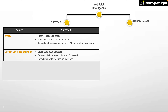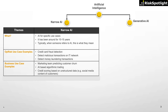Examples of implementation of narrow AI technologies in operational risk management include credit card fraud detection, detecting malicious transactions on IT networks to manage cyber risks, and detecting money laundering transactions. Examples of narrow AI in first-line use cases include marketing teams predicting customer churn, AI-based algorithmic trading, and credit scoring models based on unstructured data such as social media content of a customer.